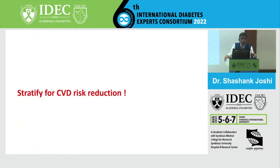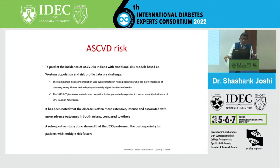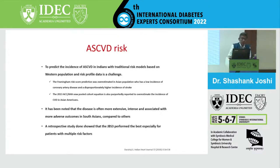Eventually it all came to risk stratification, and everybody got their own calculator. In India, we still need to generate Indian science to develop an Indian calculator - it's all about predicting atherosclerotic cardiovascular risk. If you want to predict incident ASCVD risk in Indians using traditional risk models based on Western population data, it is a challenge. Framingham risk score overestimates in Asian populations who have a lower incidence of coronary artery disease and shows disproportionately high incidence of stroke.